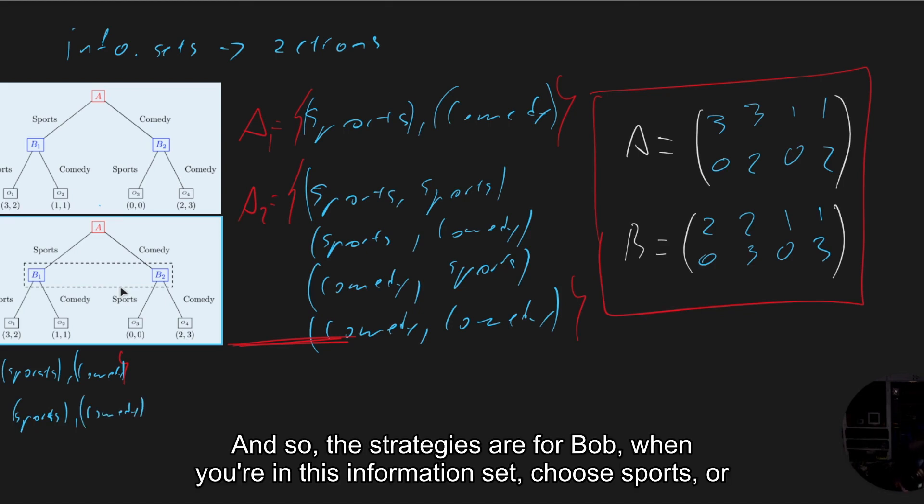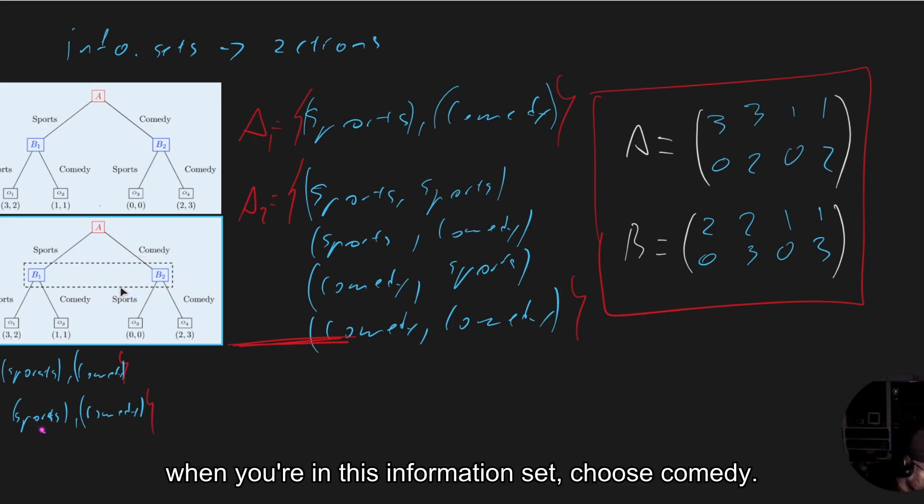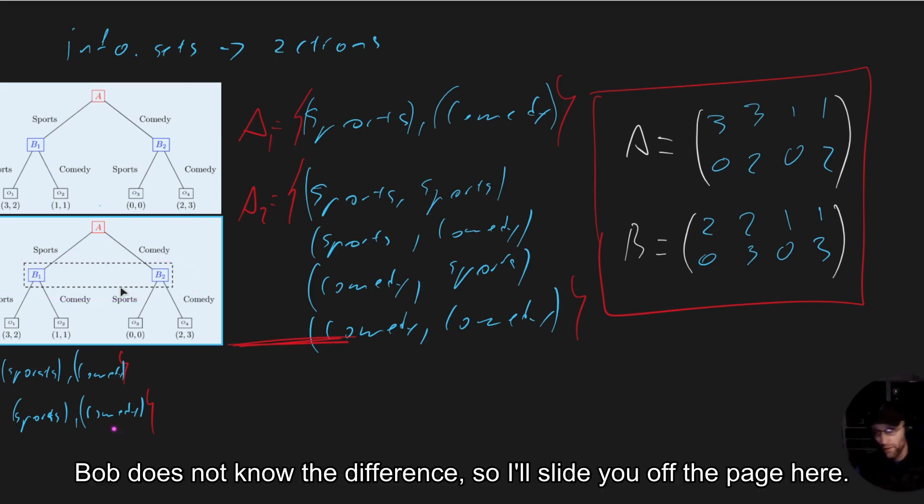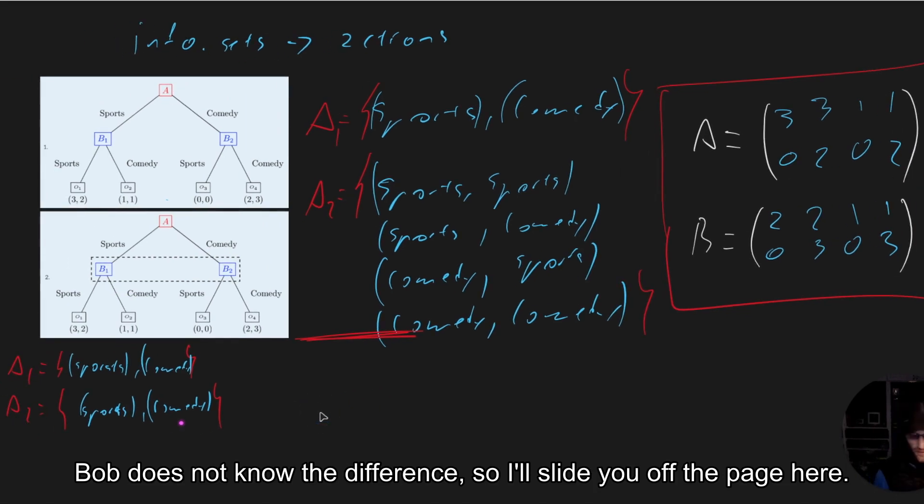And so the strategies are for Bob, when you're in this information set, choose sports or when you're in this information set, choose comedy. Bob does not know the difference. So I realize I'm slightly off the page here.